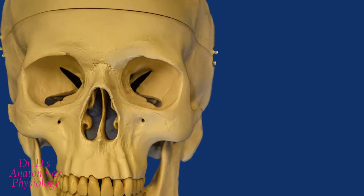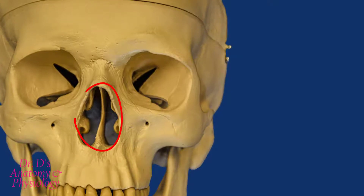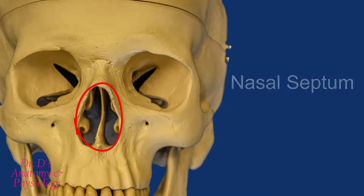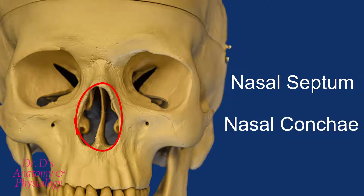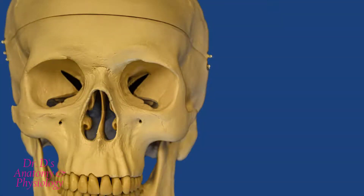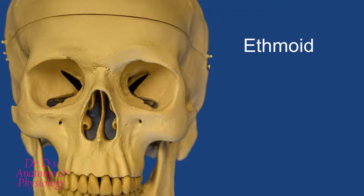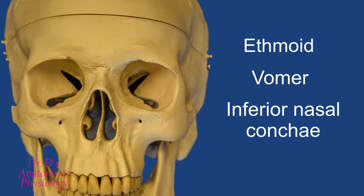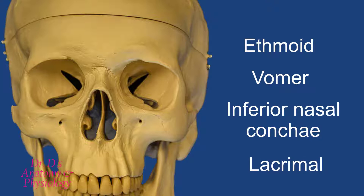In this video we'll be talking about the bones of the nasal cavity. The two major structures to point out are the nasal septum, or nasal wall, and the nasal conchae, also known as turbinates. To discuss the structure of the nasal cavity we'll be talking about the ethmoid bone, which we covered in a previous video, the vomer, the inferior nasal conchae, and additionally the lacrimal bone, which has a functional relationship to the nasal cavity although it does not structurally contribute to it.